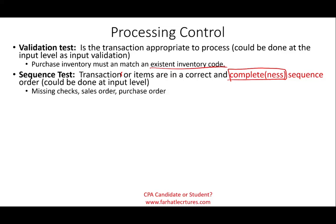Notice some of these controls overlap. For example, if you're processing checks and a check is missing, it's going to raise a red flag and give you a report that a check is missing. Sales orders — each one should have a predetermined number. You're looking for any duplicate sales orders or any that are missing; you want to know why it's missing. The processing control should tell you: look, we went from sales order 1050 to 1052 — what happened to sales order 1051? Same thing applies for purchase orders.